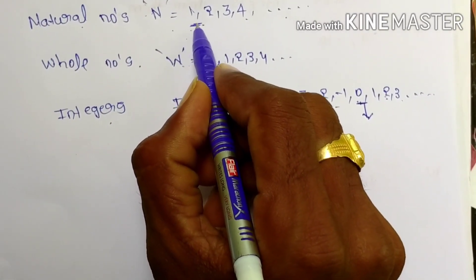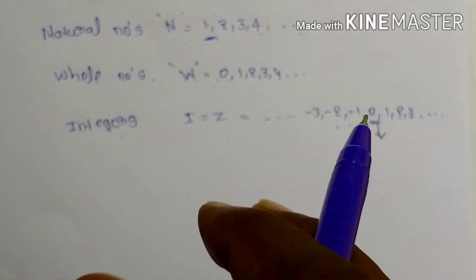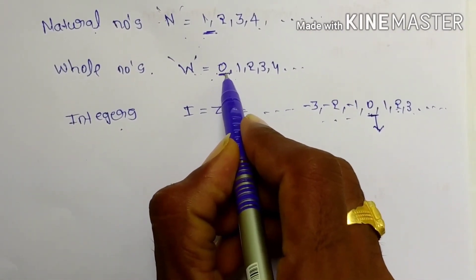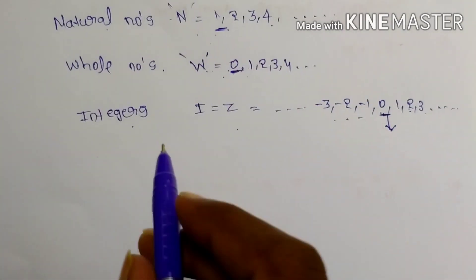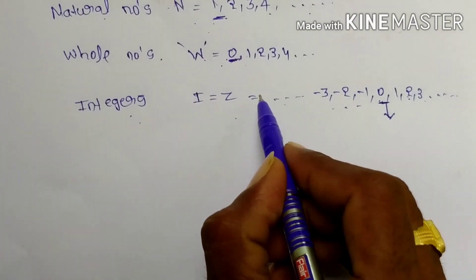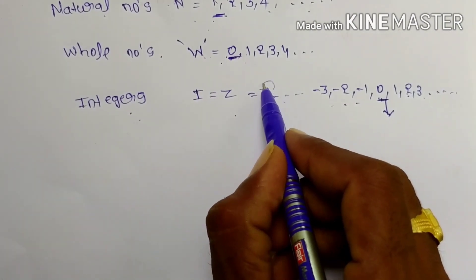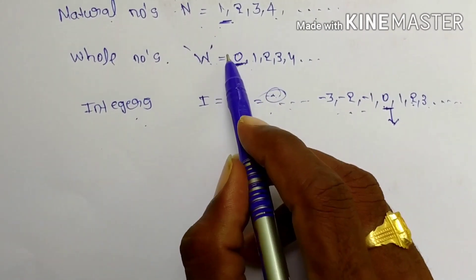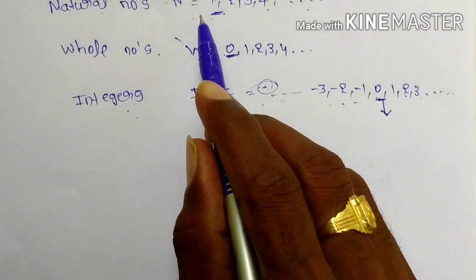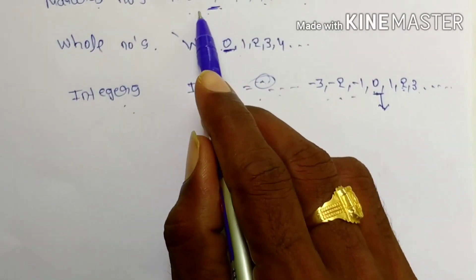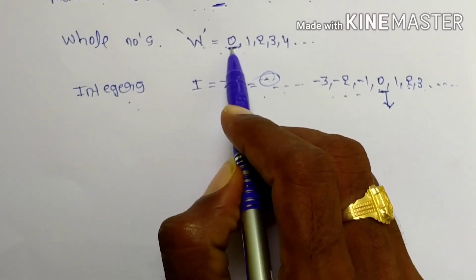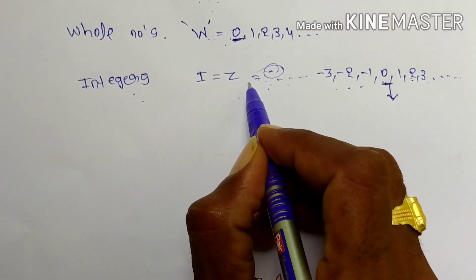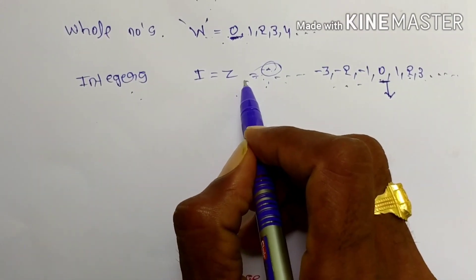0 is neither positive nor negative. The smallest number in natural numbers is 1. The smallest number in whole numbers is 0. Which is the smallest number in integers? We cannot say, because we don't know where the negatives end. So we can only identify the smallest number in natural numbers and whole numbers, but not in integers.